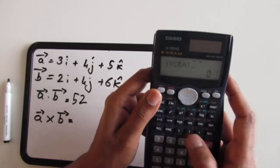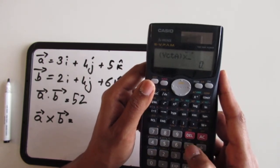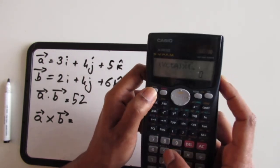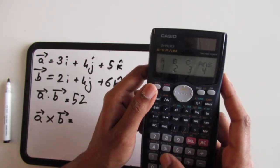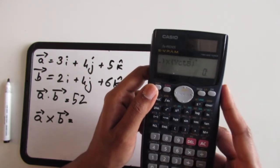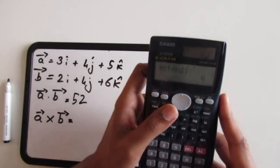I'm going to select vector A, and for cross product it's a simple multiplication sign, and then I'm going to select vector B. So vector A cross vector B is...